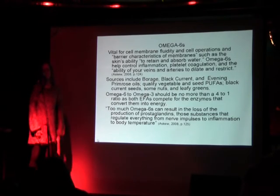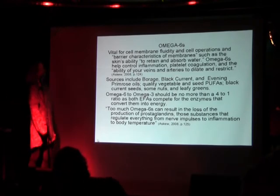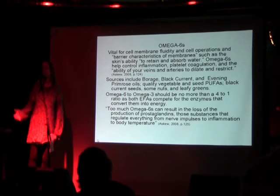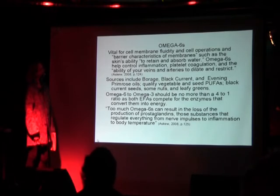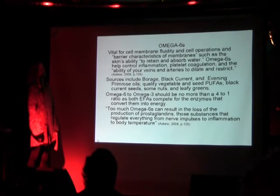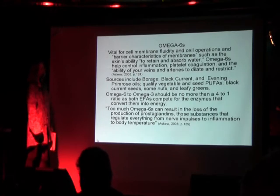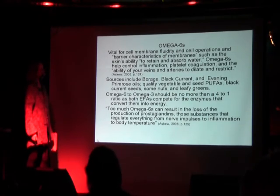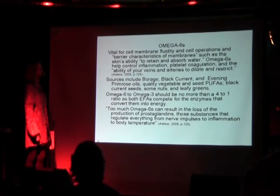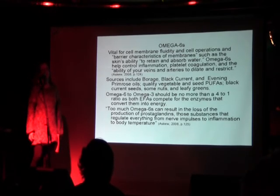Omega-3s and 6s are wonderful for skin. Omega-6s — one of the two EFAs — are vital for cell membrane fluidity and cell operations, the skin's ability to retain and absorb water, controlling inflammation, platelet coagulation, and the ability of your veins and arteries to dilate and restrict. Omega-6s are involved in keeping blood both thick and thin. Sources include borage, black currant, evening primrose oils, quality vegetable and seed oils, black currant seeds, many nuts, and leafy greens like spinach, cabbage, and kale.